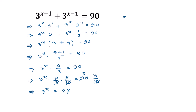So we have 3 to the power x equals 27. We can write 27 as 3 to the power 3. Since the base on both sides is 3, the exponents must be equal, so x equals 3. This is the solution to our given equation. If you like this video, please subscribe to my channel. Thanks for watching.